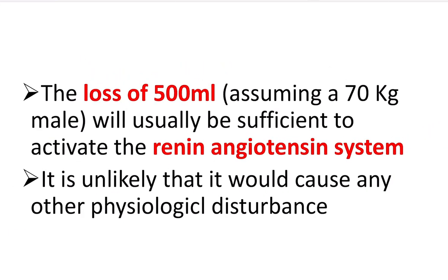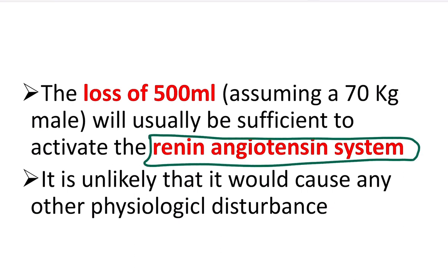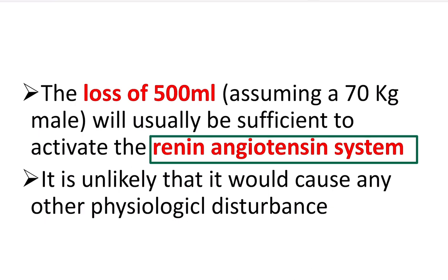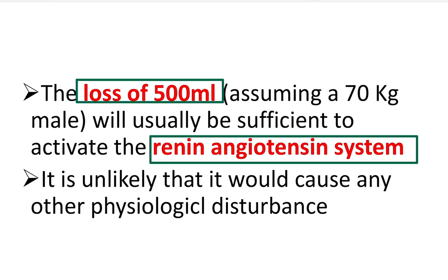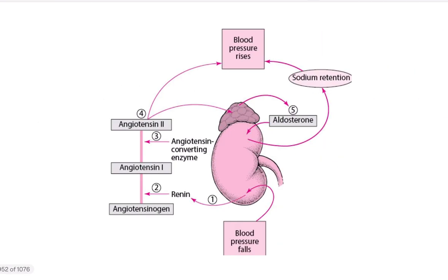First, is the loss of 500 ml of blood enough for activation of the renin-angiotensin-aldosterone system, or RAAS? Yes — RAAS is activated with a 500 ml blood loss, and it is unlikely to cause any other significant physiological disturbance. The RAAS mechanism will bring the body system back within normal limits within a very short time.